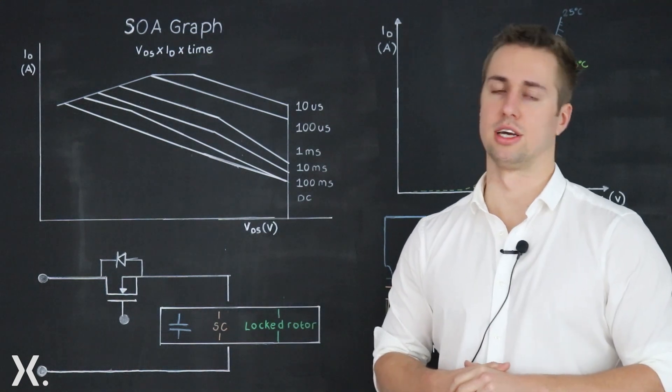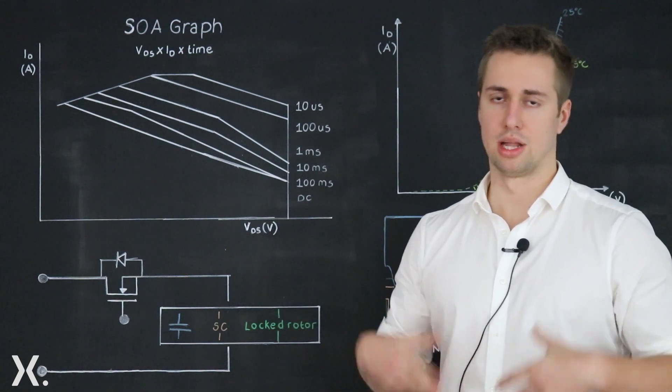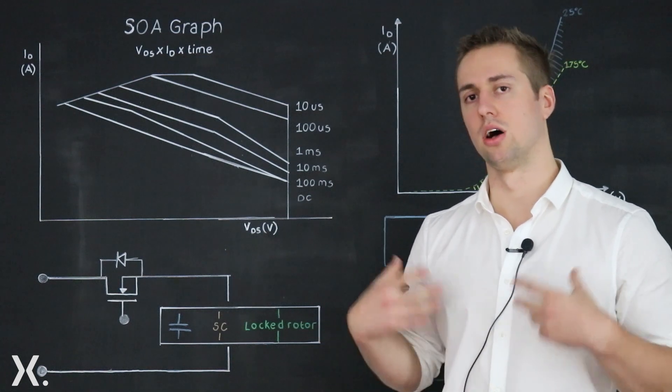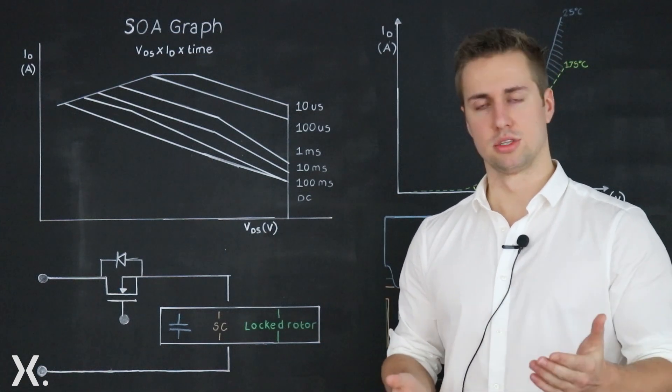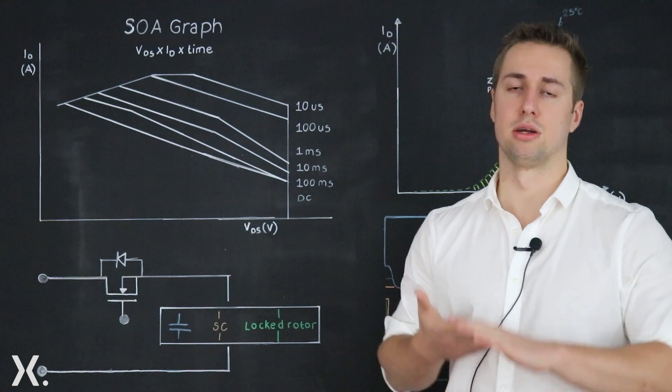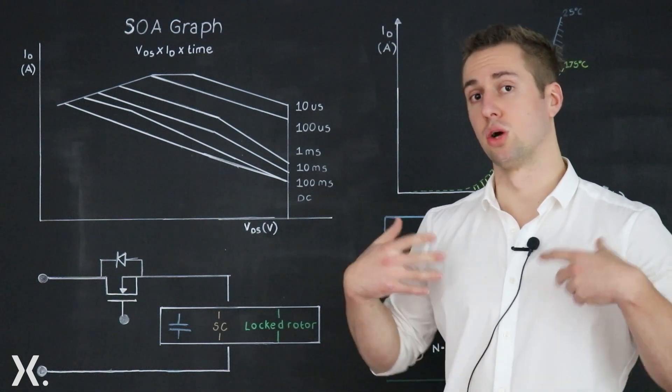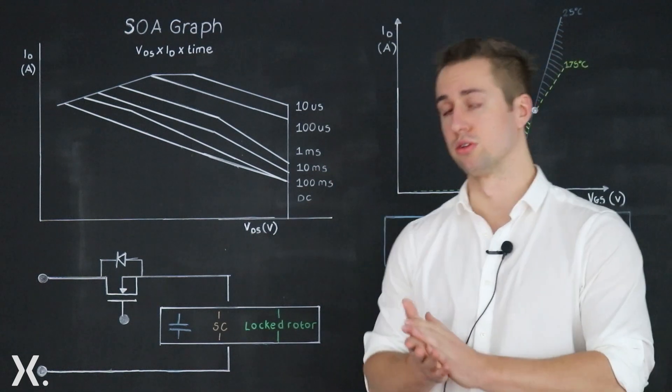Another example would be short circuit protection. Here the MOSFET will act as an E fuse and it will see a large current across it for a short amount of time, but because the current is so large SOA again becomes important.